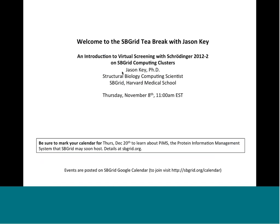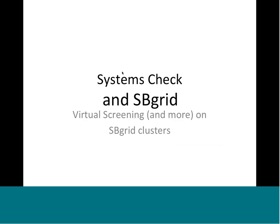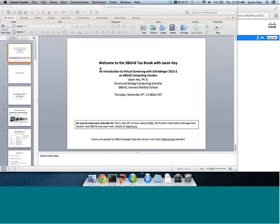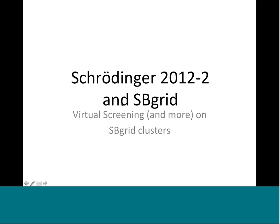Today I'm going to talk about virtual screening with the Schrodinger 2012 package on our SBGrid computing clusters. Systems check — it seems like everything is working. If your audio isn't working or if you can't hear me, please send me a chat and let me know. From here, everything appears to be working properly, so we're going to go ahead. I want to talk about virtual screening with Schrodinger 2012, and I'm not going to go too in-depth about the guts of the Schrodinger package and the virtual screening.